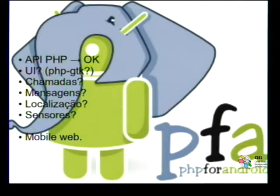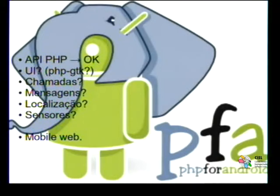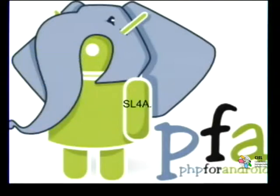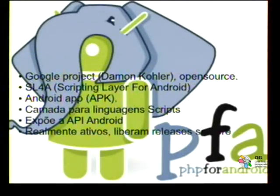Android has sensors including a gyroscope, allowing you to know the values of the X axis and so on. There's also web functionality. SL4A, as I mentioned, is a Google project — developed by the demo team and also open source.